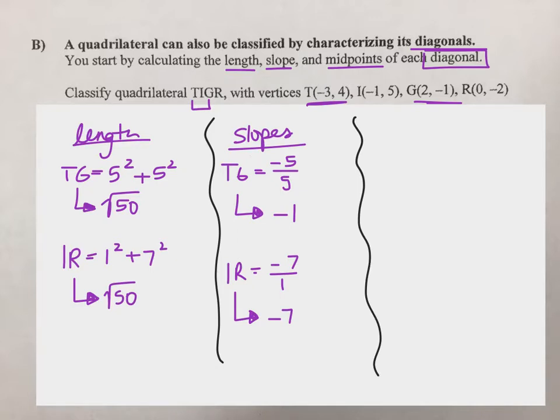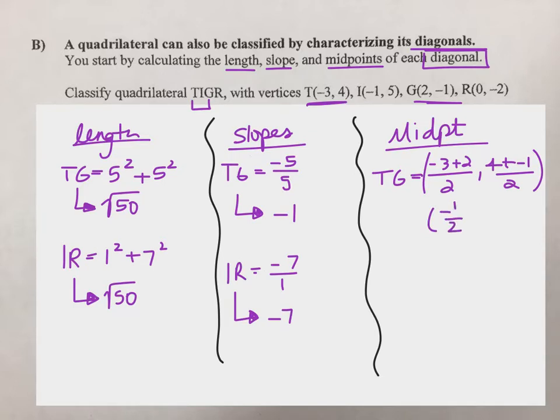All right, and the last thing it tells me to do is calculate the midpoint. So if we find midpoint here, remember that's where we find the average, so we're going to add the X's together and divide by two. For TG that's going to be negative three plus two over two, and then for the Y value, four plus negative one over two. So for TG I'm going to get a midpoint of negative one half and positive three over two. Same process for IR. If I add the X's together that gives me negative one over two. If I add the Y's together, five plus negative two is positive three over two.